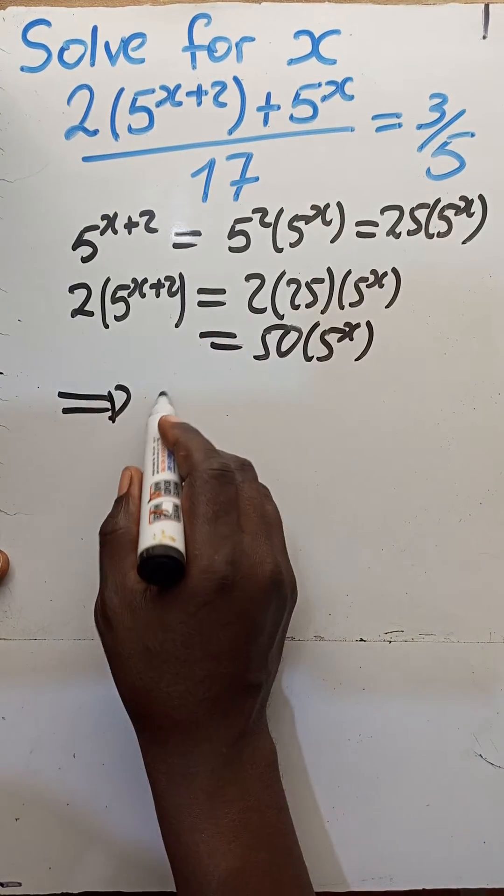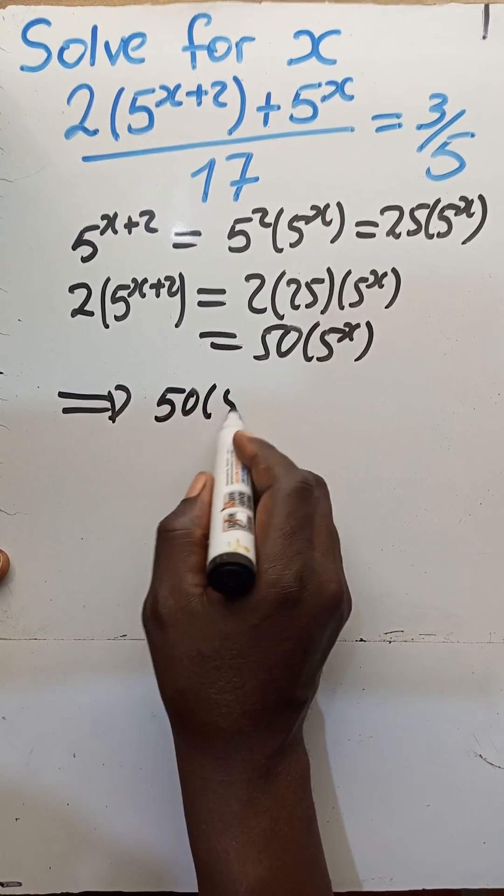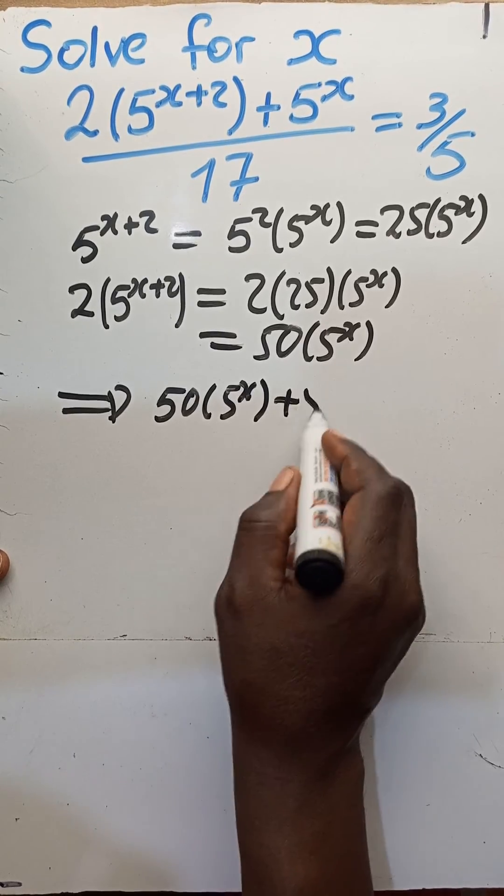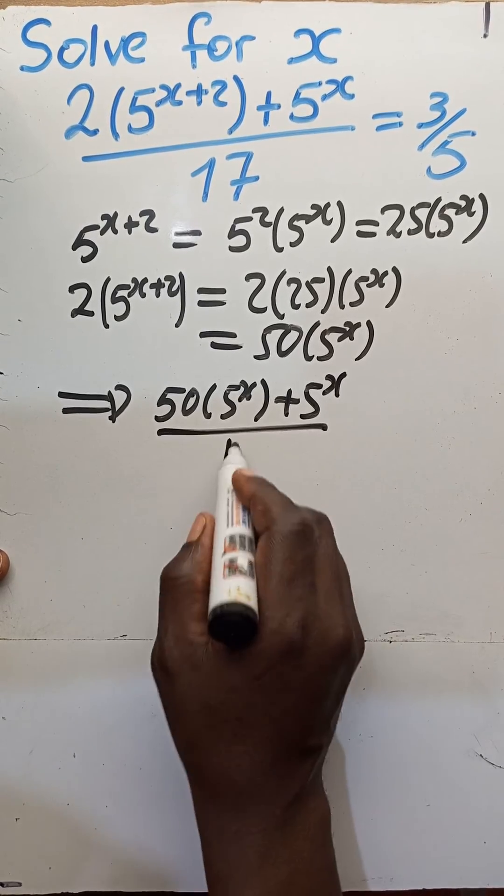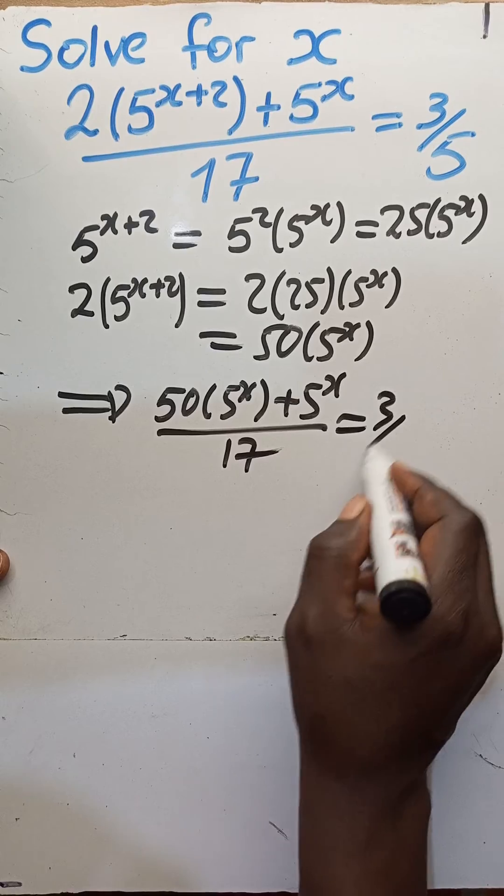Therefore, the expression becomes 50 times 5 to the x plus 5 to the x all over 17 is equal to 3 over 5.